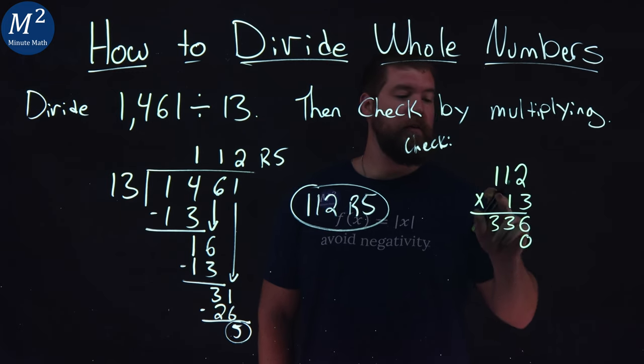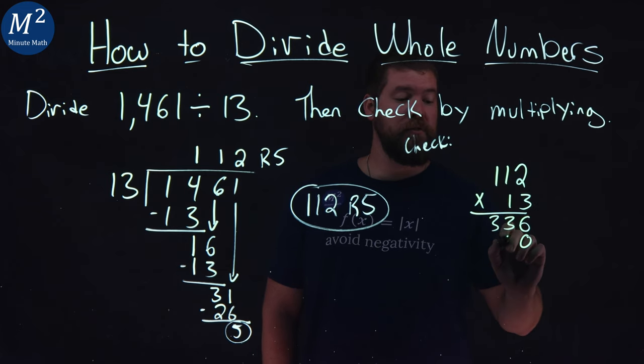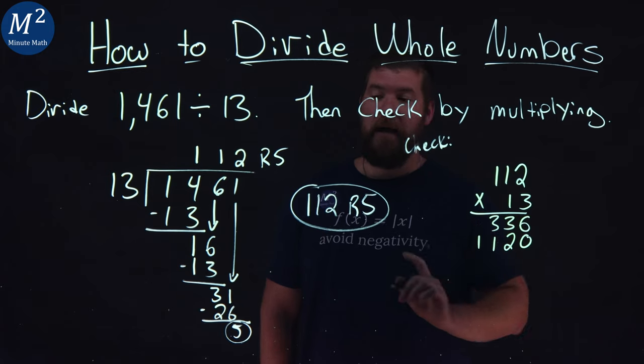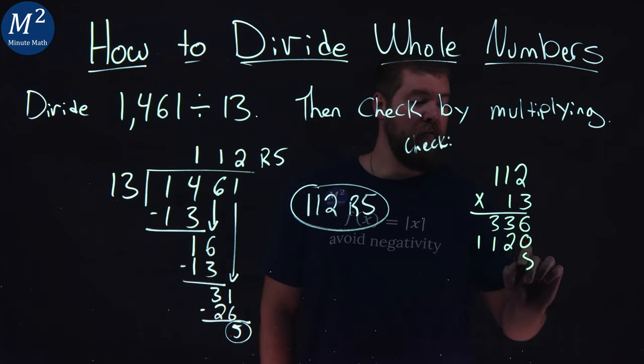Place value 0 goes here. 1 times 2 is 2. 1 times 1 is 1. And 1 times 1 is 1. Now, I said we have to add a remainder of 5 right there.